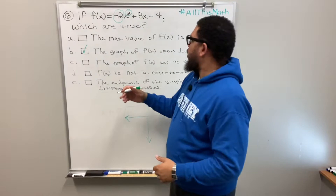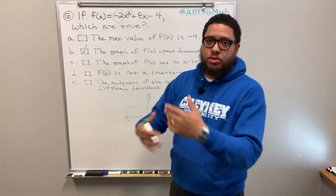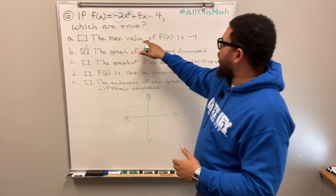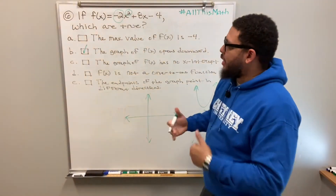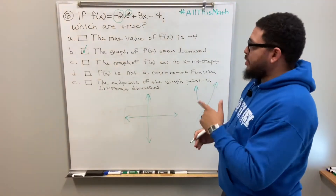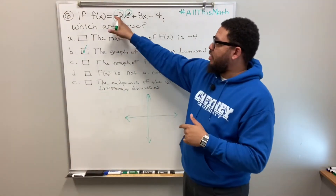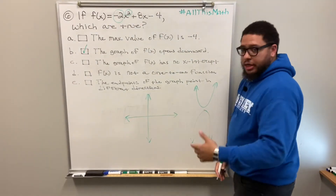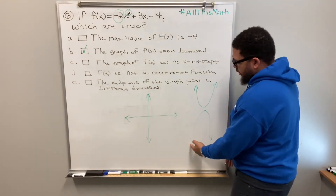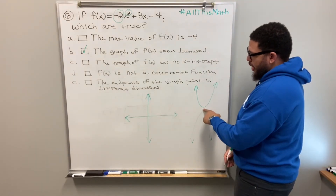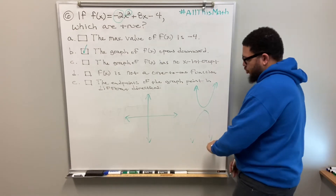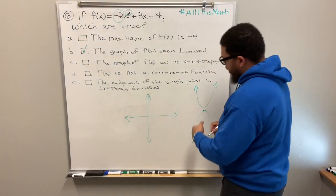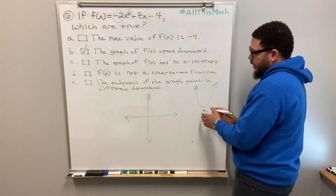Now back to the answer choices. Choice A says the max value of f of x is negative four. Because the parabola opens down, it has a maximum value — the highest point. Think of a roller coaster: it starts at the bottom, comes up to the top — that's the maximum point — and then drops. That highest point is called the vertex.